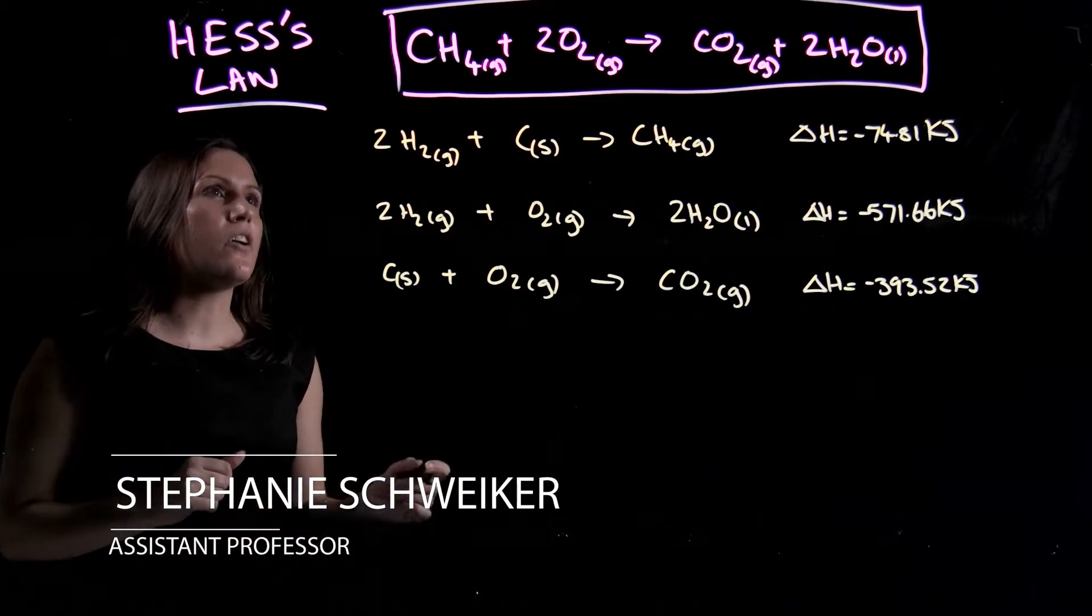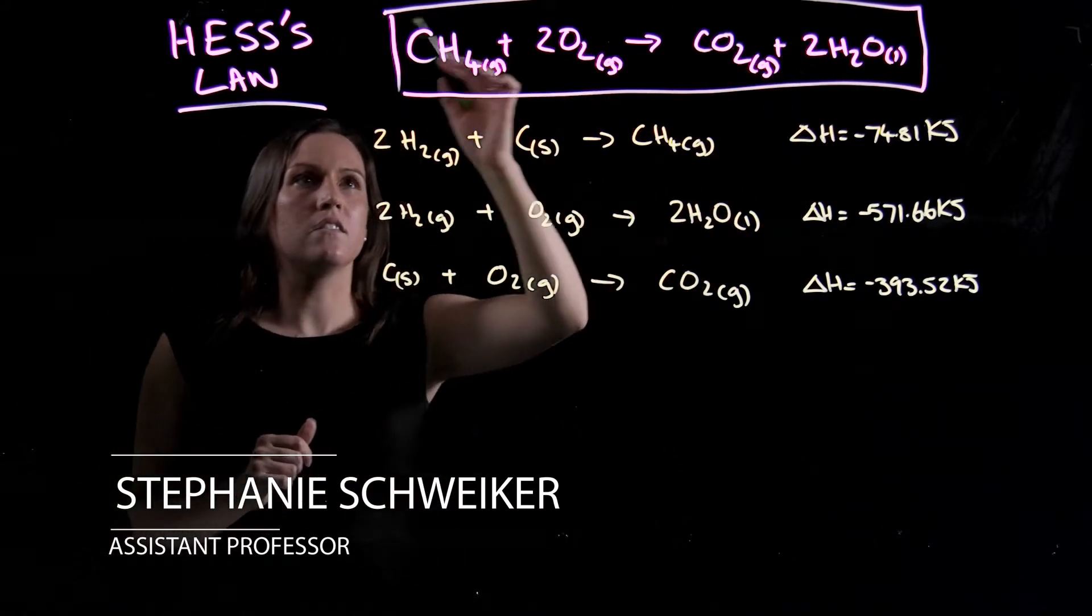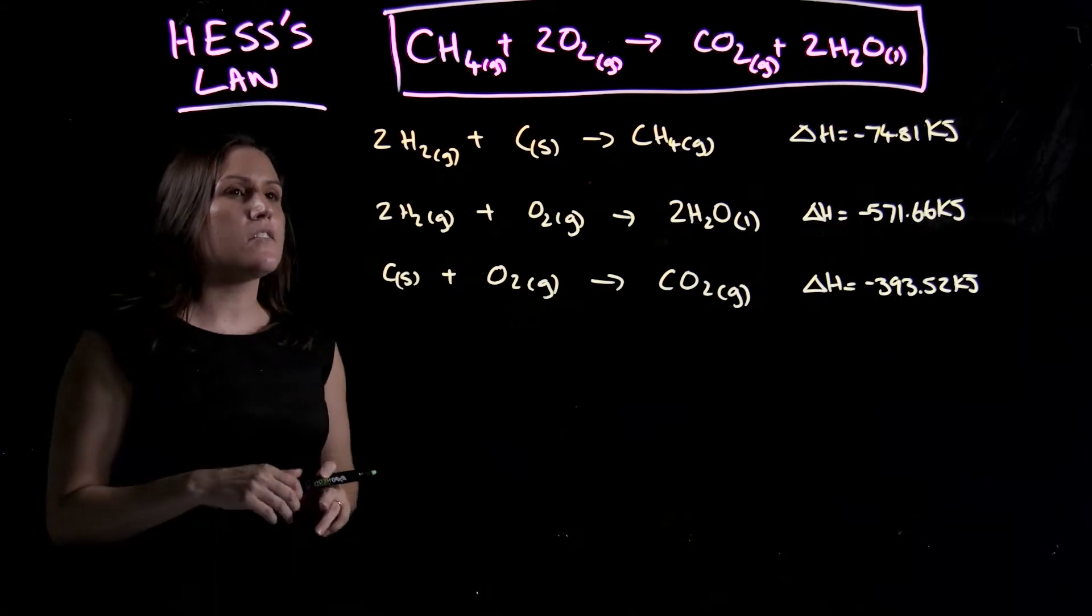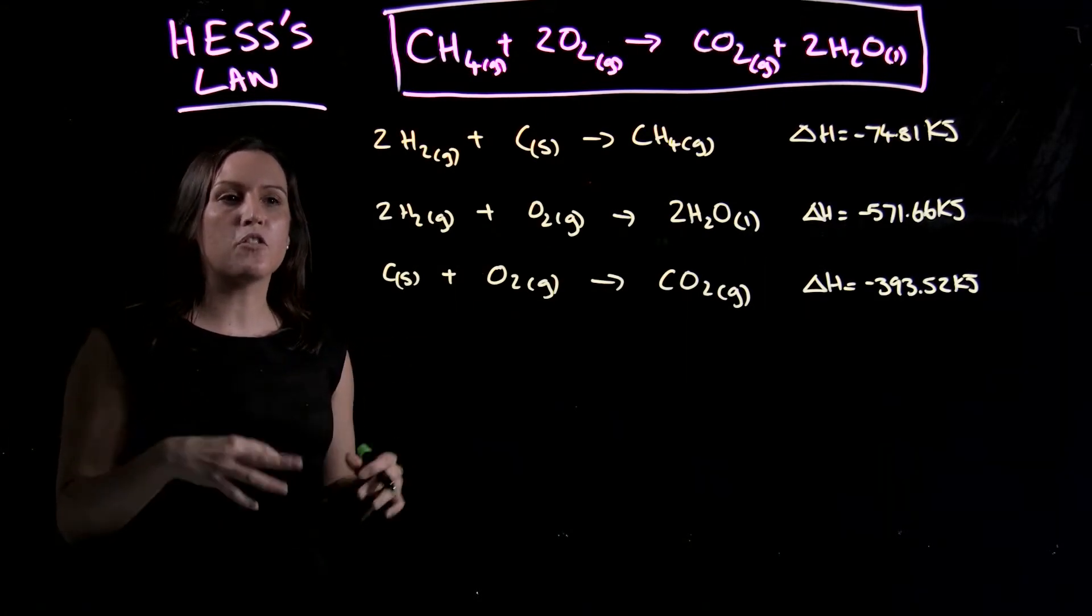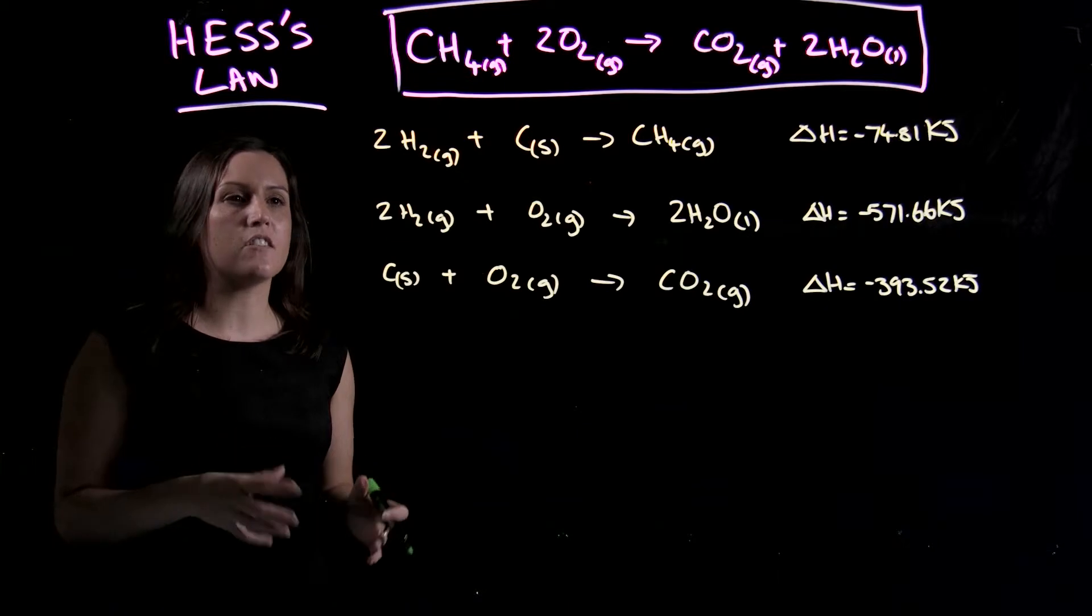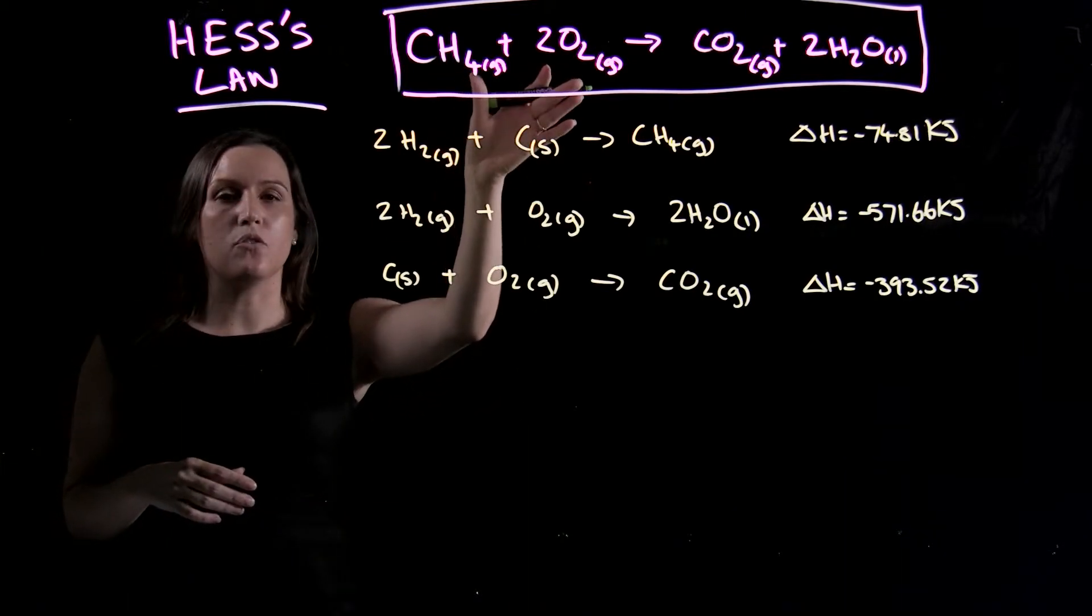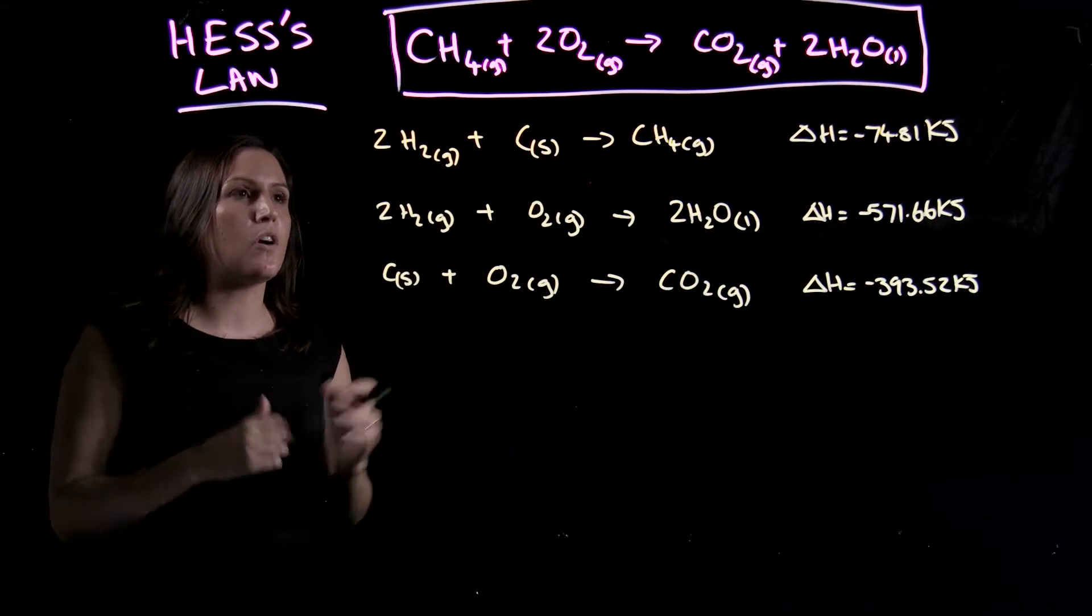So we've got our equation here, and we've got our half reactions that make up that overall reaction. So what we're going to do is flip, multiply, or divide these reactions so that the sum of these reactions add up to our overall reaction. So what do I mean?